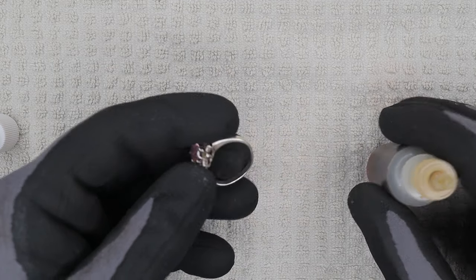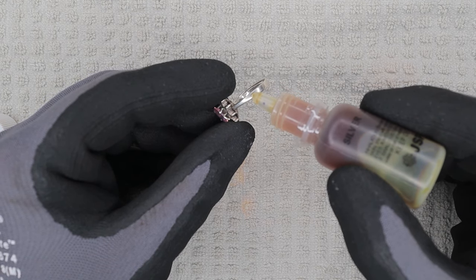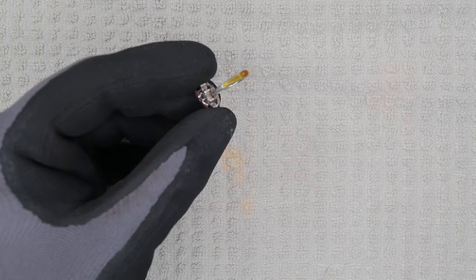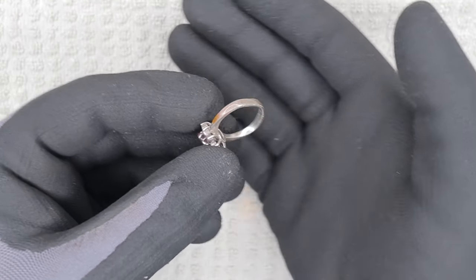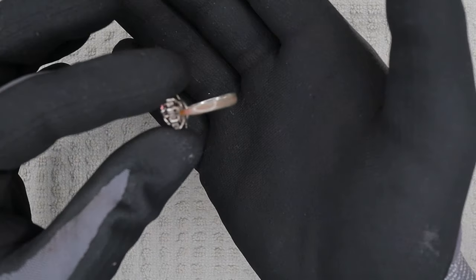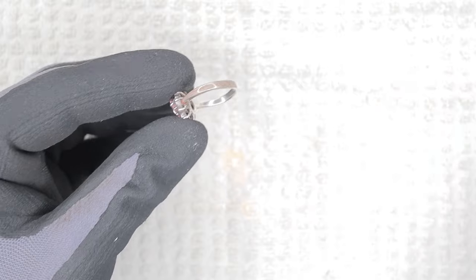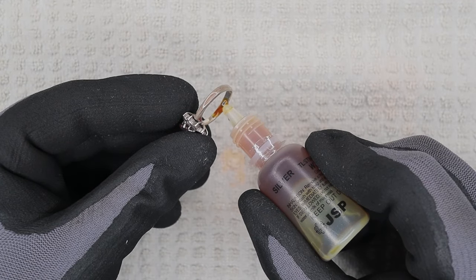We're going to take the silver ring that we just verified with 18 karat gold acid and dab some of this on it. It should turn red, and as you can see, it is turning red. Let's put a little more. I don't care about this ring—trash ring that I found metal detecting.